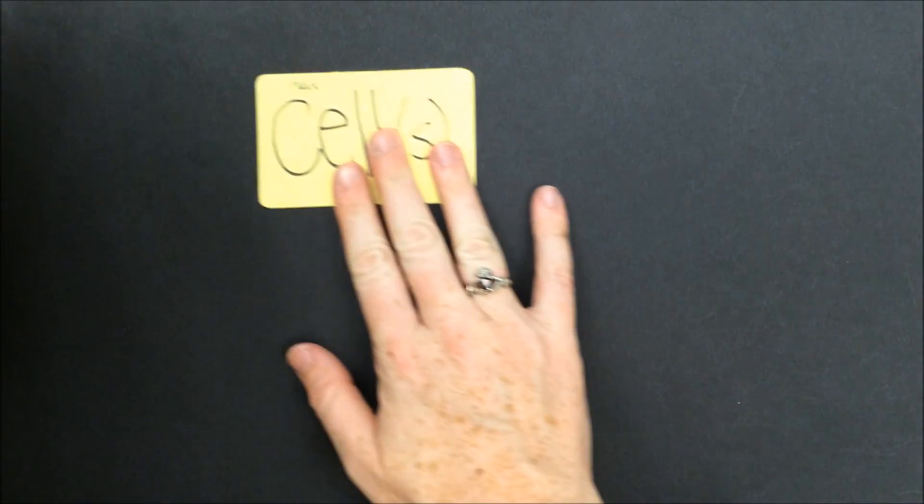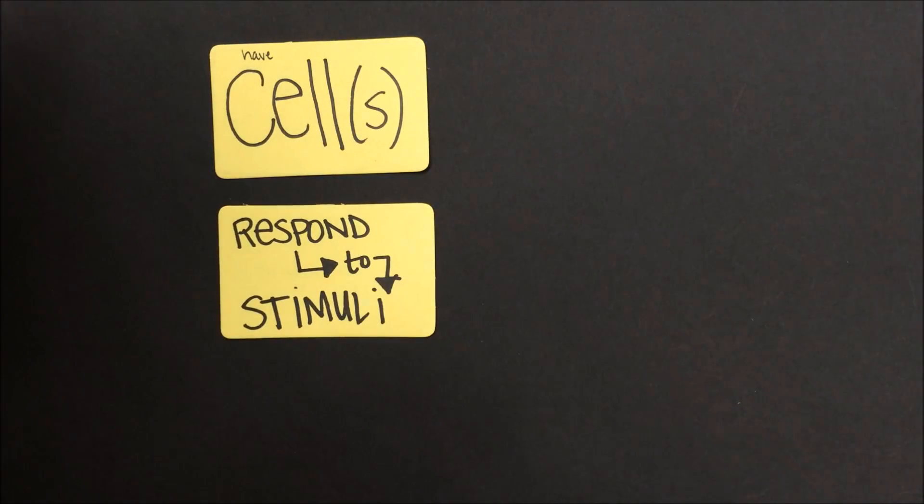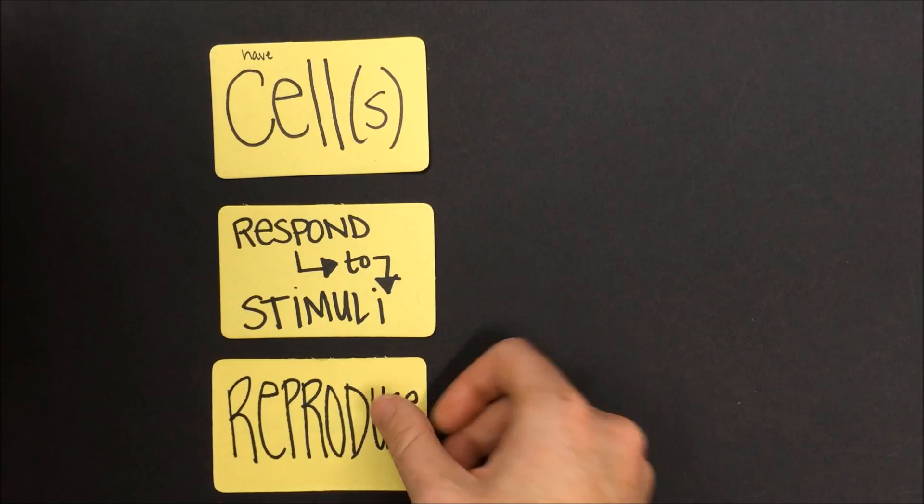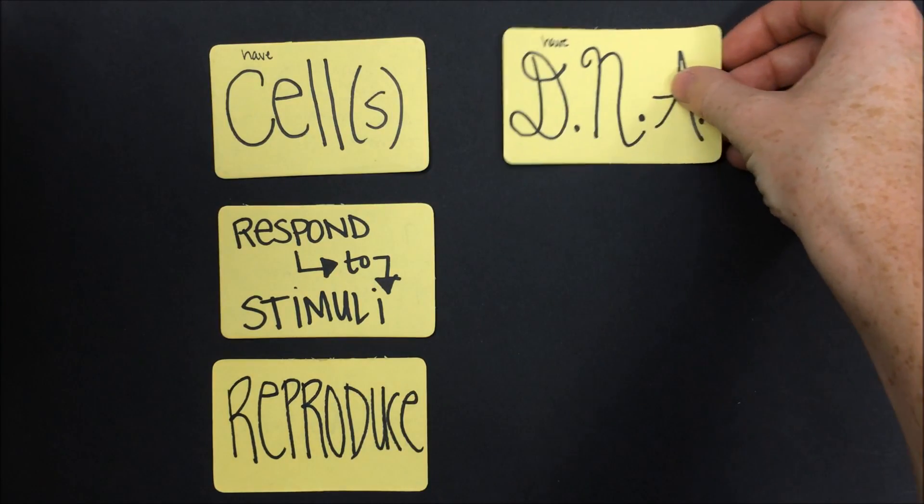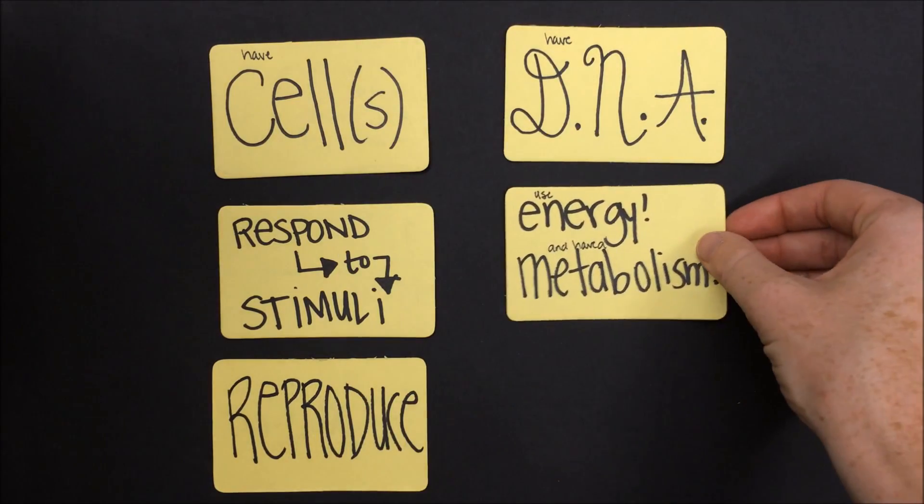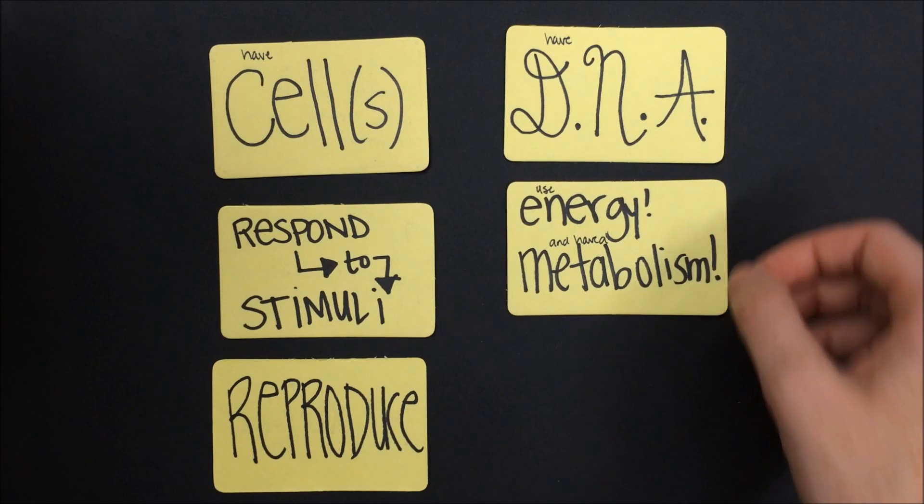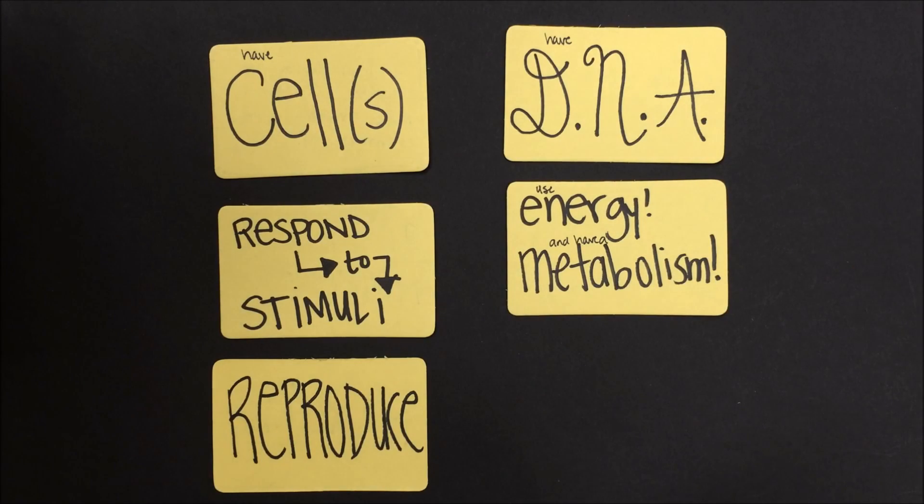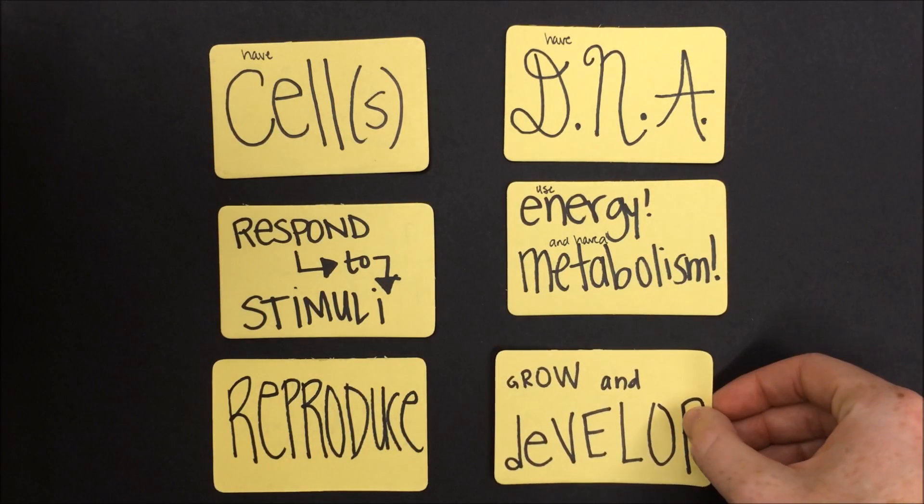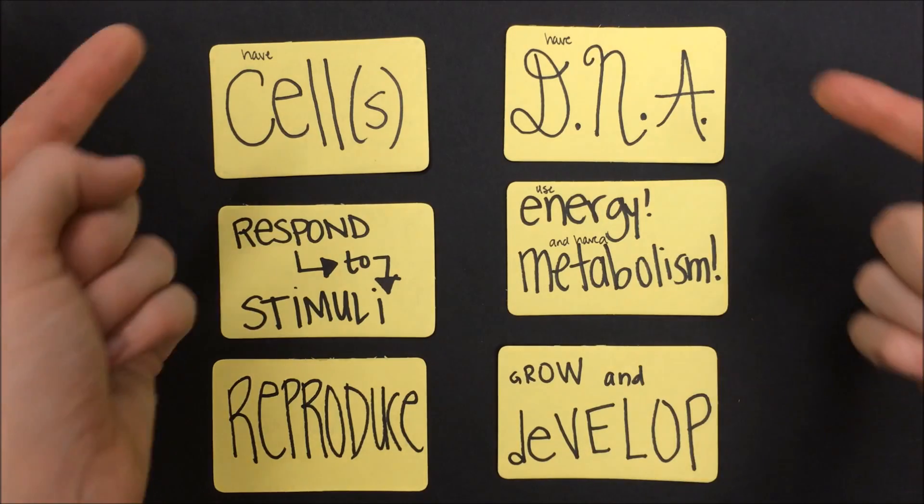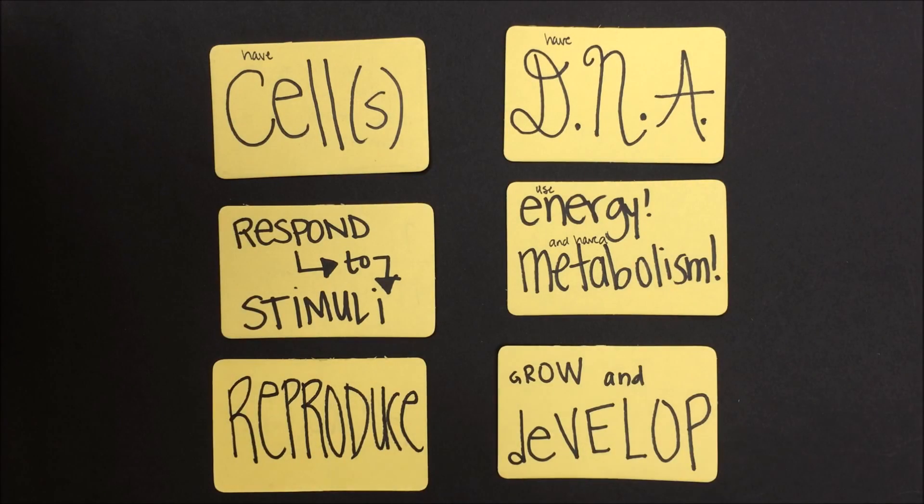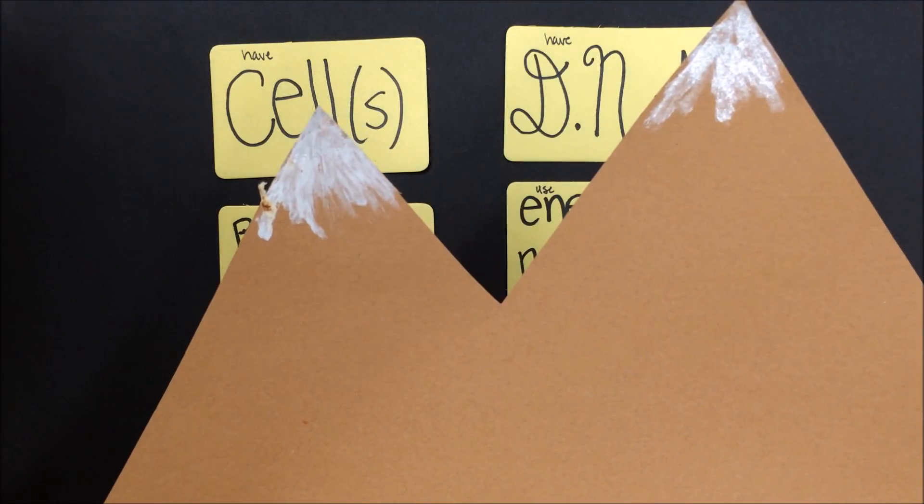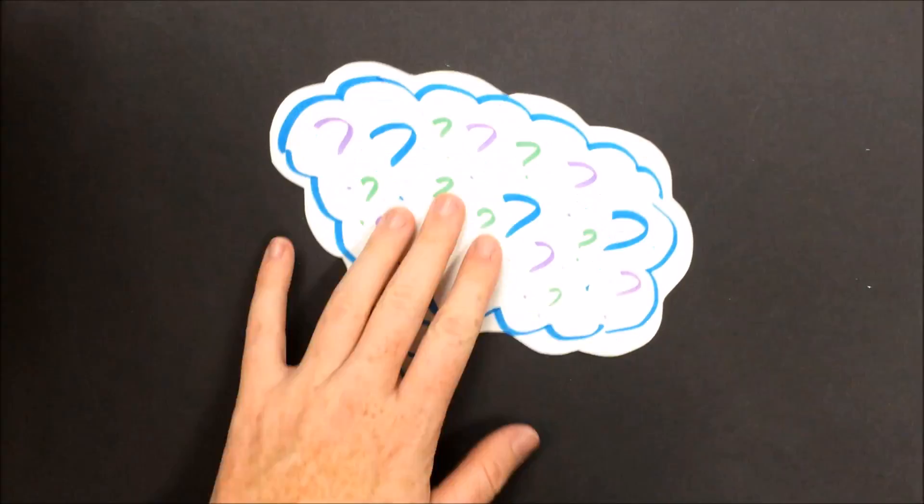All living things have at least one cell. All living things respond to stimuli in their environment. All living things reproduce. All living things have DNA. All living things have an energy metabolism, which means they have to use energy to power their life processes. And all living things grow and develop. These six characteristics help us explain the difference between a living organism like a butterfly and a non-living thing like mountains. Let's explore each of these characteristics in a little bit greater detail.